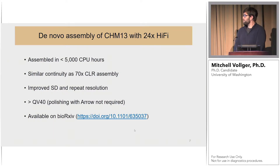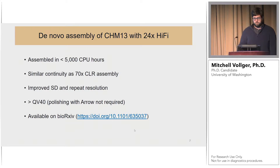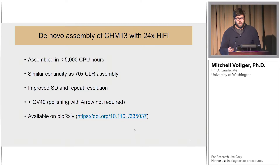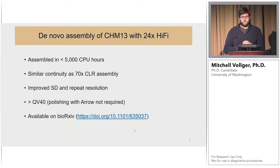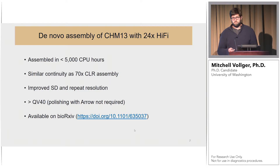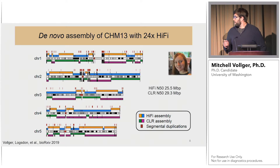To test this hypothesis, we did a de novo assembly of CHM13, an essentially haploid human cell line, using 24x HiFi data generously provided by PacBio. Some highlights: we assembled this genome in less than 5,000 CPU hours — one tenth the CPU time of our previous CLR assembly of CHM13. The continuity is extremely similar, we have improved SD and repeat resolution, quality is estimated at over QV40, and we no longer need slower polishing algorithms like Arrow and Quiver. Detailed results are available in our bioRxiv preprint.